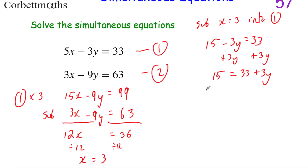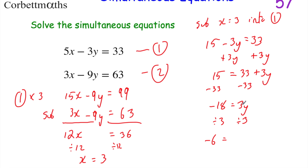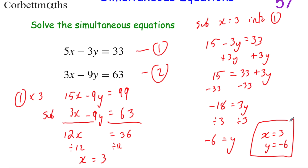Now I'm going to take 33 away from both sides. 15 − 33 = −18, and on the right-hand side I'm left with 3y. So −18 = 3y. Dividing both sides by 3: −18 ÷ 3 = −6. So y = −6. We've got x = 3 and y = −6, and that's our answer.